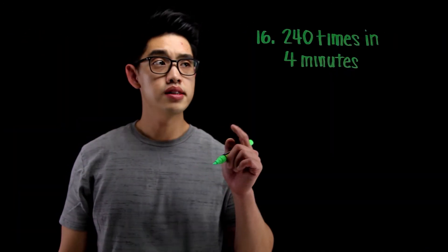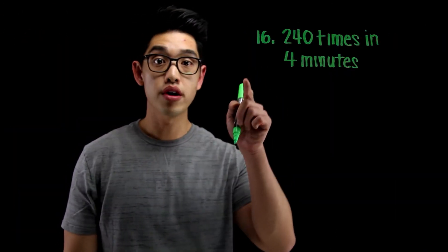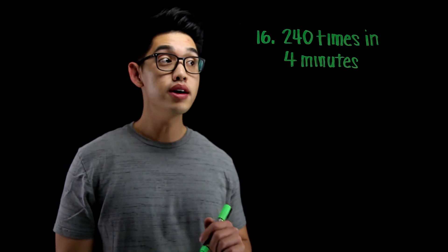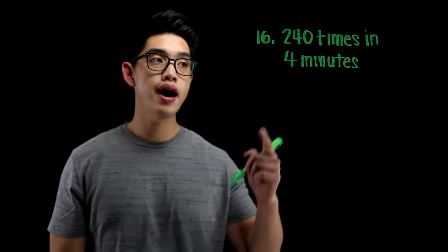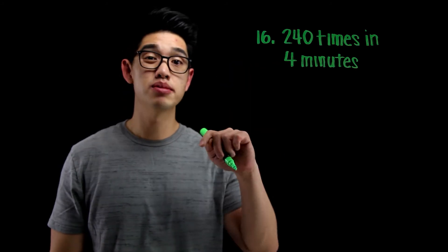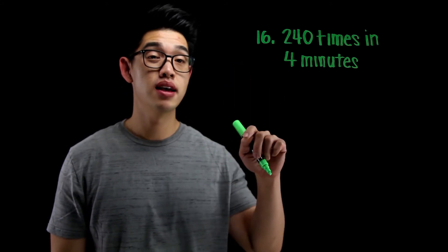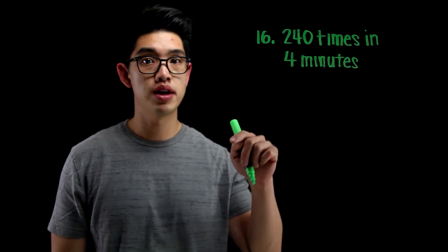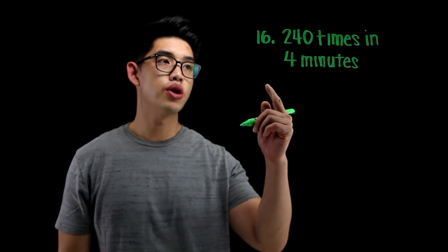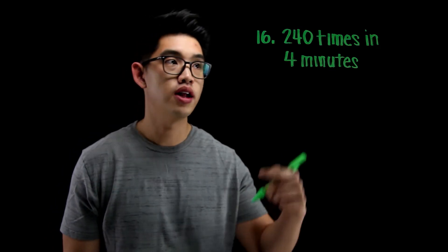Number 16 says that your heart beats 240 times in 4 minutes. I want to find the unit rate and figure out how many times it beats not in 4 minutes, but in 1 minute. So all you've got to do is, again, divide.